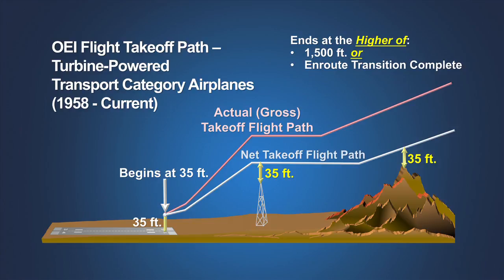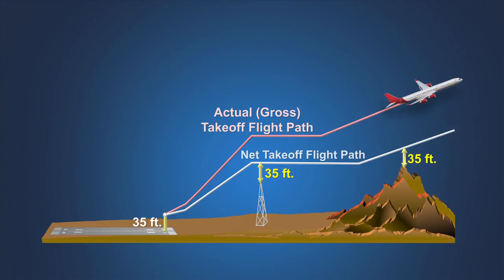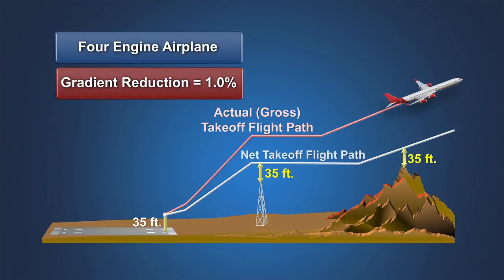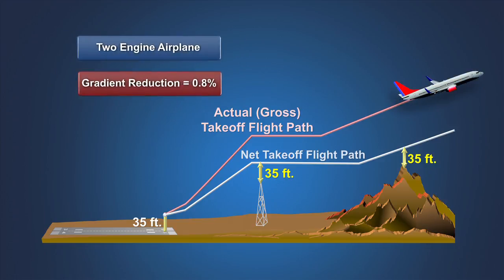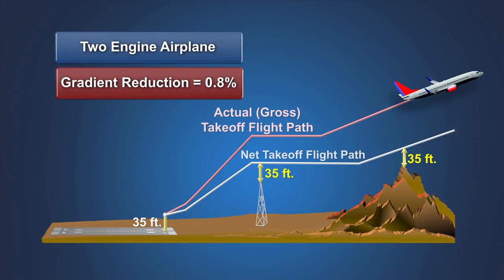When required by the operating rules for turbine-powered airplanes, this net takeoff flight path must clear obstacles by 35 feet. For four-engine airplanes, the net takeoff flight path is defined by reducing the gross climb path by 1%, retaining the original 1% obstacle clearance margin required by the previous operating rules for the Boeing 707. For the level acceleration and flap retraction segment, the 1% regulatory gradient reduction is converted to an equivalent reduction in acceleration, resulting in a net third segment that is longer than the gross third segment distance. For three-engine jet airplanes, the regulatory gradient and acceleration reduction is 0.9%. For two-engine jet airplanes, the regulatory gradient and acceleration reduction is 0.8%.